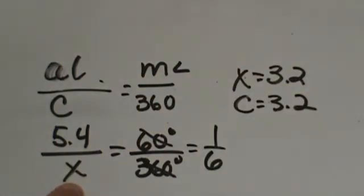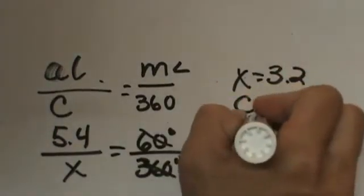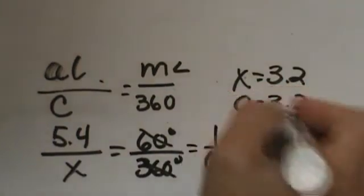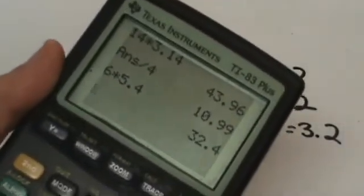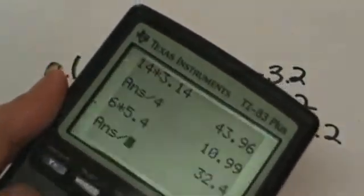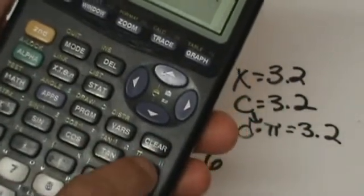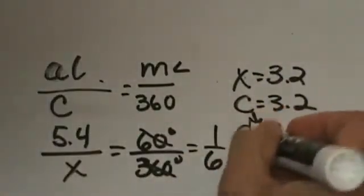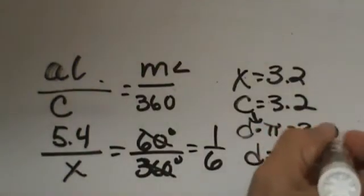Now we have to work backwards to answer the question and find the diameter. Circumference is equal to d times pi, which is 32.4, so all I did was plug in d times pi and divide both sides by pi. I am going to take 32.4 and divide it by pi, which is 10.31. That means my diameter is 10.31.